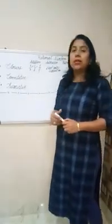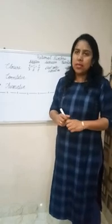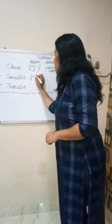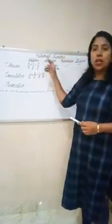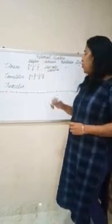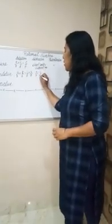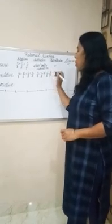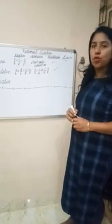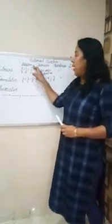Here comes the next property, that is the commutative property. This property says when two rational numbers are added in any order, the result will be the same. So A upon B plus C upon D is always equal to C upon D plus A upon B. However, A upon B minus C upon D is never equal to C upon D minus A upon B. In case of multiplication, it is always true, but in case of division, it is not true. So we can say rational numbers are commutative under addition and multiplication.